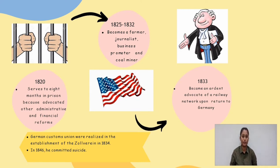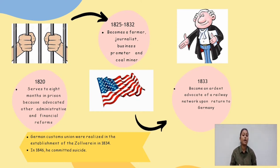From 1824 to 1832, he lived in the United States, where he became a farmer, a journalist, a business promoter, and a coal miner. His protectionist ideas gained much more popularity in the United States than in Germany. After returning to Germany, List became an ardent advocate of a railway network for Germany. The railway lines later built in Germany closely followed his proposals in a paper published in 1833. His efforts to create a German customs union were only realized in the establishment of the Zollverein in 1834. His plans for a German postal system and a national patent law were realized more than 20 years after his death. He had financial difficulties and despair over the delay in German unification, and in 1846 he committed suicide.